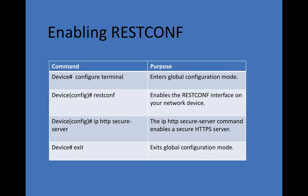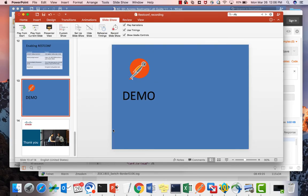To enable RESTCONF on a CAT 9300, go to configuration mode and simply enable RESTCONF — this enables the RESTCONF interface on the network device. Since RESTCONF uses HTTPS, you also need to enable the 'ip http secure-server' command. And that's it.